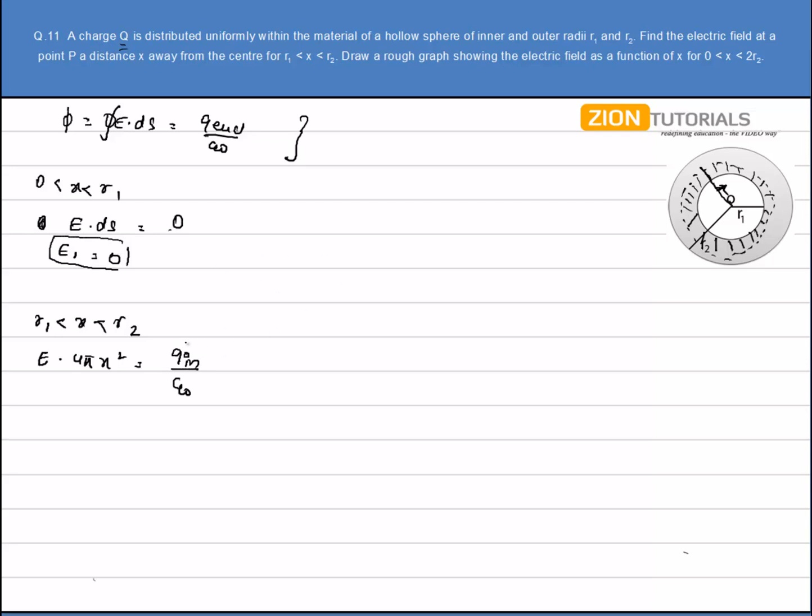To calculate this charge, ρ, the volume charge density, will be given by Q total in the total volume, that is the hollow sphere, divided by total volume, that is 4/3 π(R2³ - R1³). This is my volume charge density.